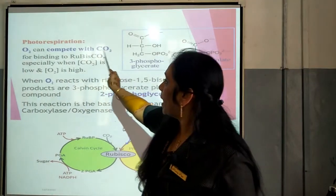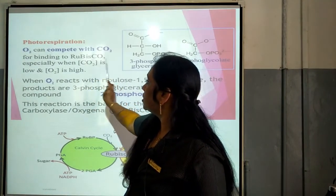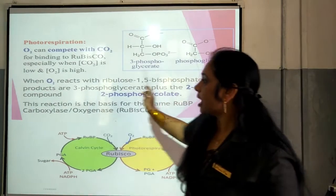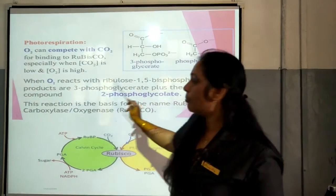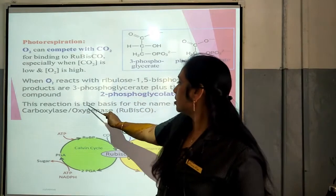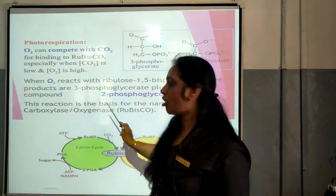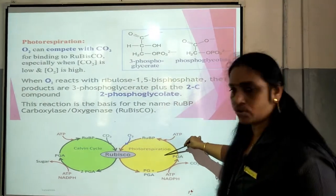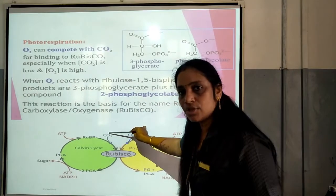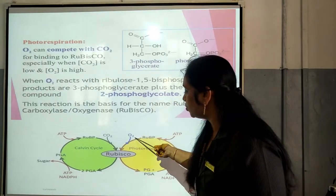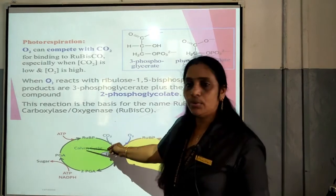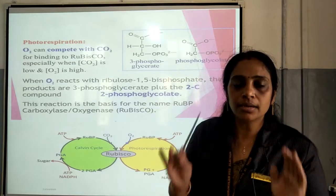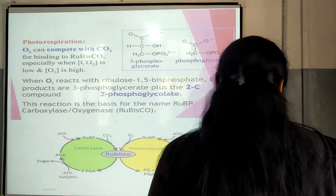O2 can conflict with carbon dioxide for binding to RuBisCO, especially when carbon dioxide is low and oxygen is high. When O2 reacts with ribulose 1,5-bisphosphate, the products are 3-phosphoglycerate plus the 2-carbon compound 2-phosphoglycolate. This reaction is the basis for the name RuBP carboxylase/oxygenase, that is RuBisCO. RuBisCO is doing the Calvin cycle as well as photorespiration, but this enzyme depends on the concentration of carbon dioxide as well as oxygen. If the concentration of oxygen is low, it will be doing photorespiration; if the concentration of carbon dioxide is more, it will be doing the Calvin cycle. RuBisCO is the largest protein seen on the earth.